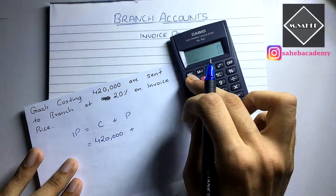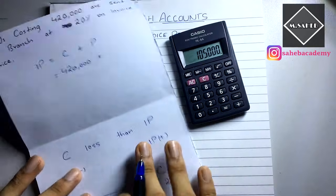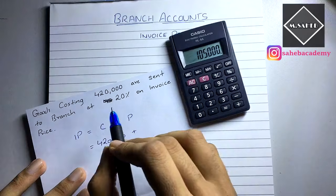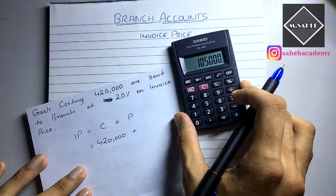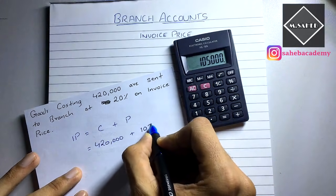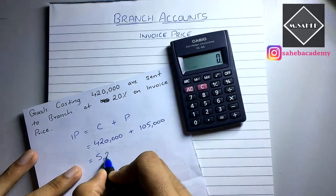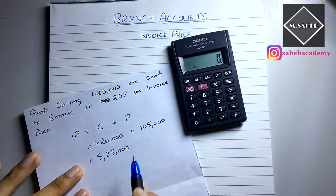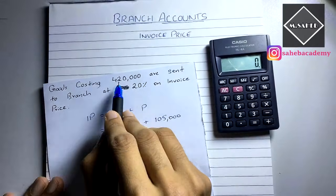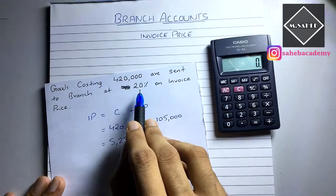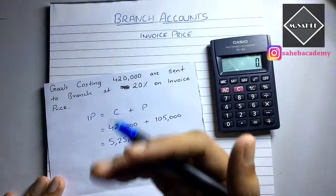Now we apply the converted percentage. 25% of ₹4,20,000 equals ₹1,05,000, which is the loading or profit. Adding this to the cost: ₹4,20,000 plus ₹1,05,000 gives an invoice price of ₹5,25,000. The conversion was necessary because the goods sent to branch were given at cost while the loading percentage was on invoice price — both had to be on the same basis before calculating.